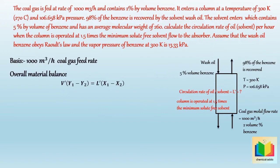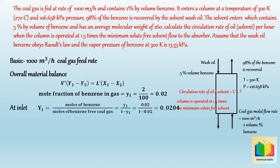Let's first calculate Y1. As given, the inlet gas contains 2% by volume benzene, hence the mole fraction of benzene in the inlet gas, y1, equals 2 divided by 100, which is 0.02. From this we can calculate the mole ratio Y1, which equals moles of benzene divided by moles of benzene-free coal gas, equal to y1 divided by (1 minus y1). After solving, Y1 equals 0.0204.